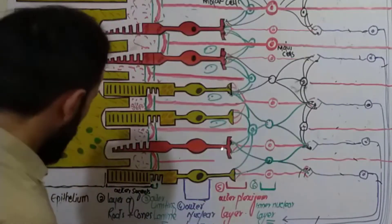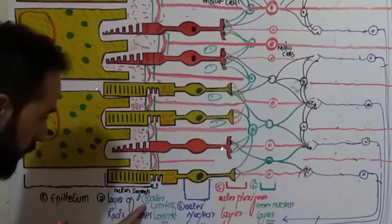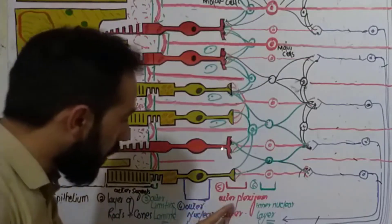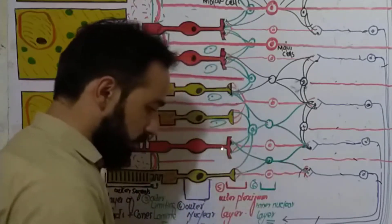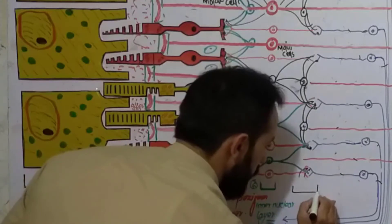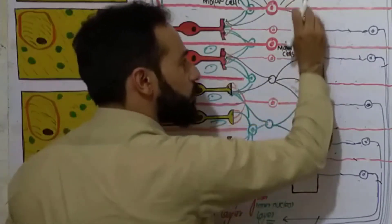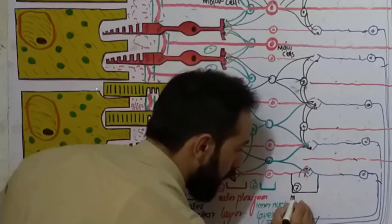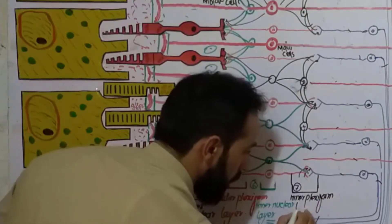So: first, the outer epithelial layer; second, the layer of rods and cones (outer segments); third, the outer limiting lamina; fourth, the outer nuclear layer; fifth, the outer plexiform layer; sixth, the inner nuclear layer. And the seventh layer is the inner plexiform layer — a network layer present towards the inner retina. So this is called the inner plexiform lamina or layer.